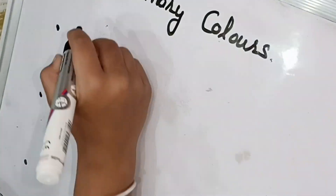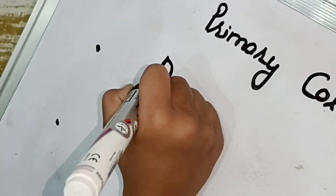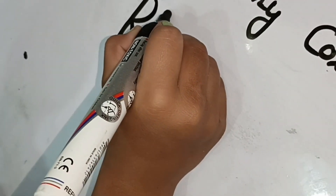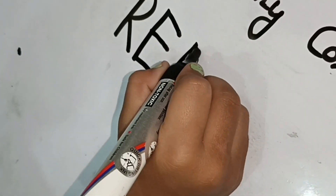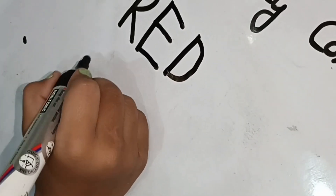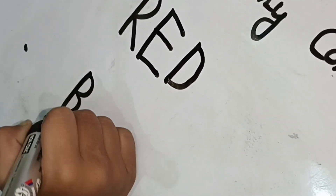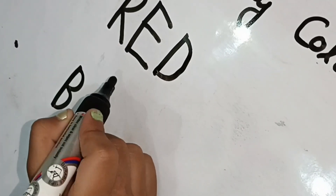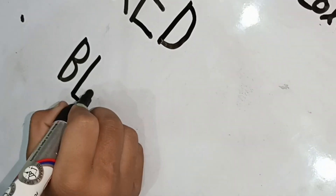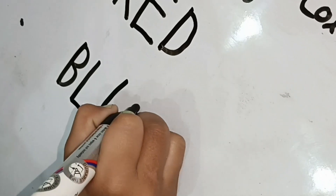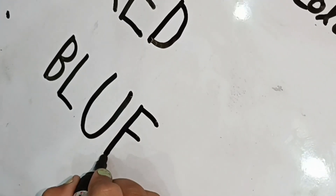Write down the spellings of these colors. R-E-D. Red. What have you written? R-E-D. Red. Now B-L-U-E. What does that make? Blue. Very good. Next.